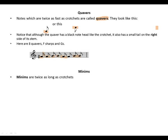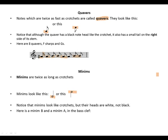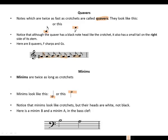Minims. Minims are twice as long as crotchets. Minims look like this. Notice that minims look like crotchets, but their heads are white, not black. Let's take a look at minims on B and A in the bass clef. This is our minims on the bass clef.